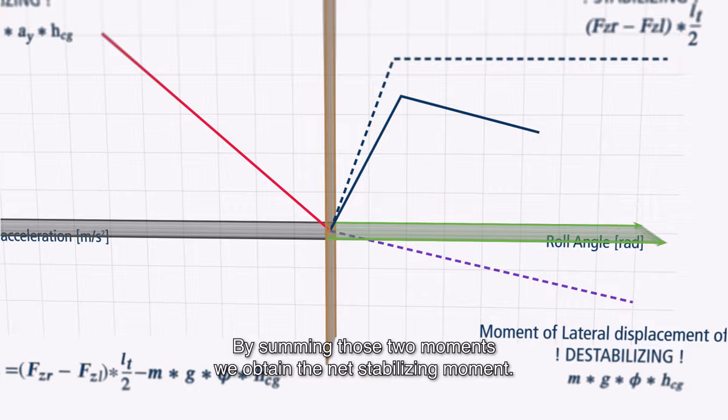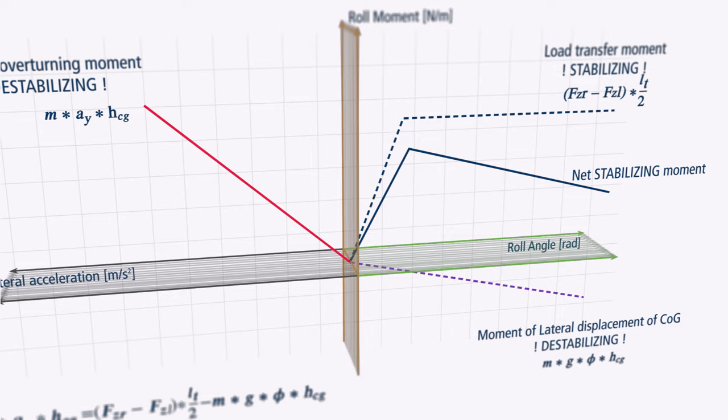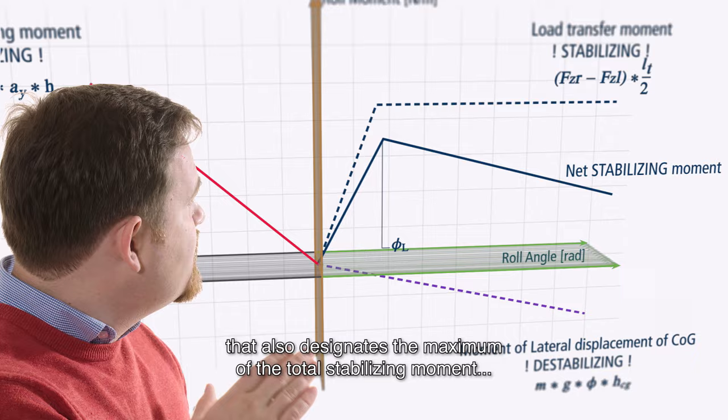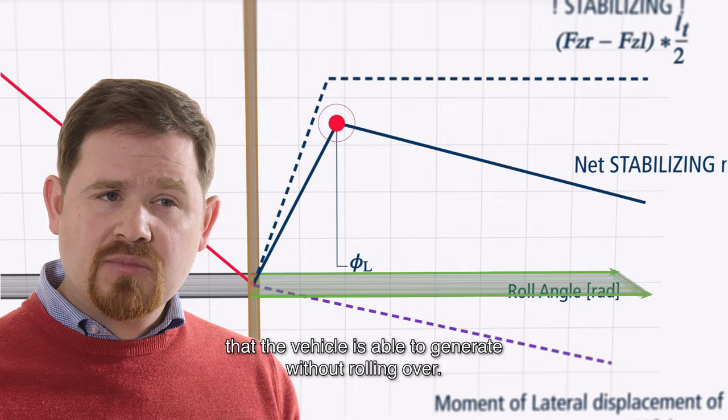Now summing those two moments together, we obtain a net stabilizing moment. We can see that the curve has a clear maximum. That also designates the maximum of the total stabilizing moment that the vehicle is able to generate without rolling over.